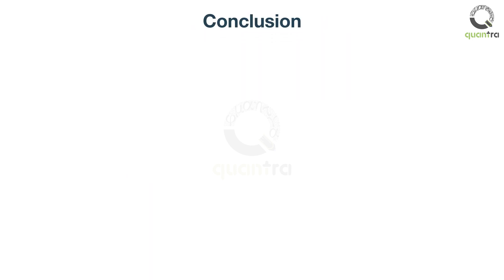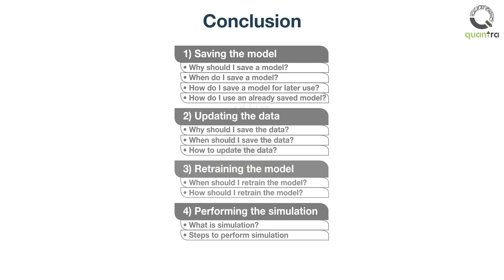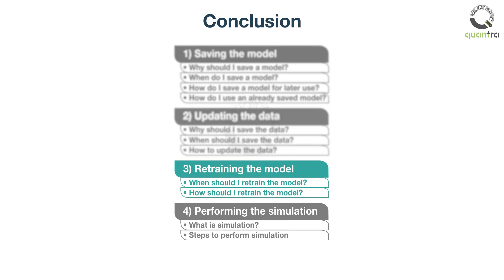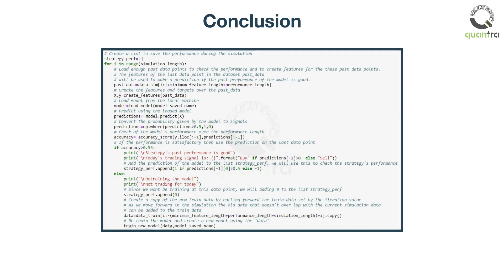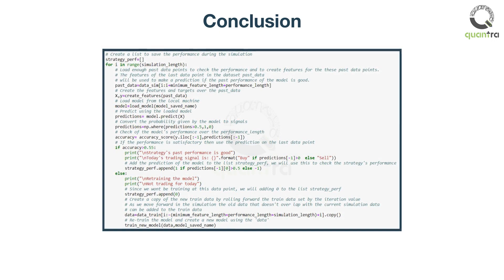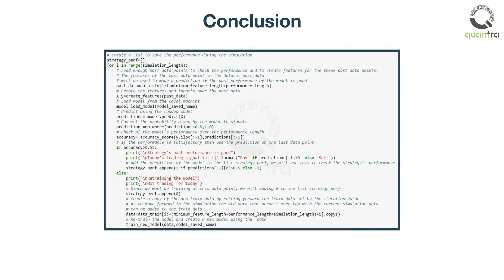In this section, you learnt about the various challenges that you can face while using a machine learning model in live trading. You understood how to save and retrieve a model, how to update the data, and how to retrain a model based on its performance. In the end, you learnt how to perform a trading simulation to test the model's performance. With this, you are all set to deploy your own models and face these challenges in live trading. In the iPython notebook following this video, you can go through the simulation code in detail.